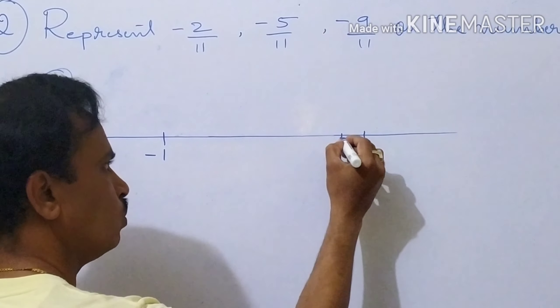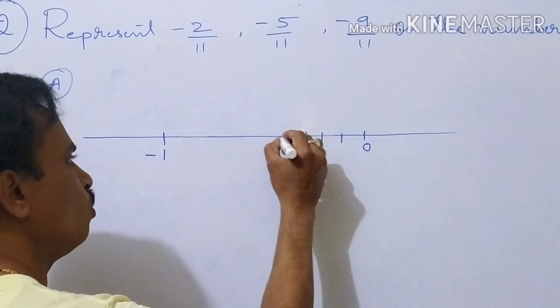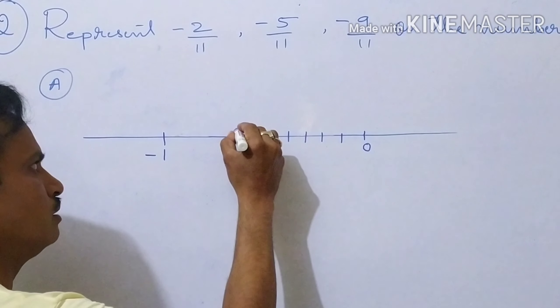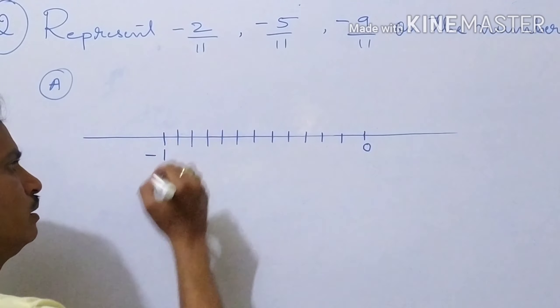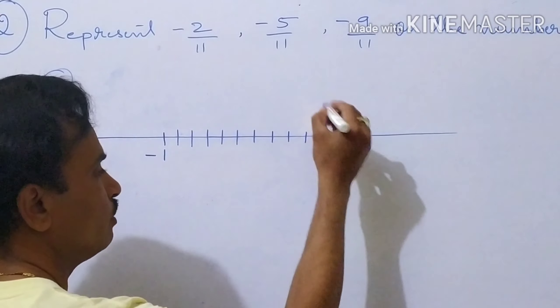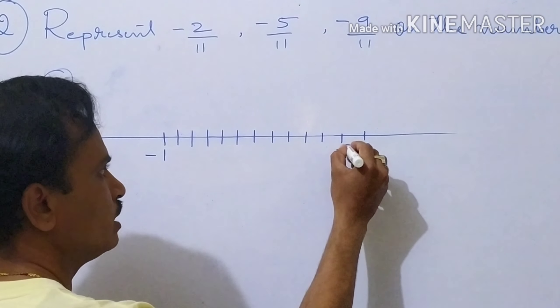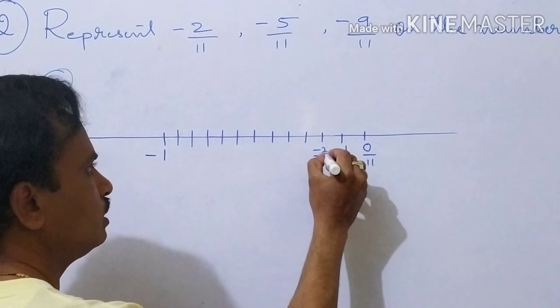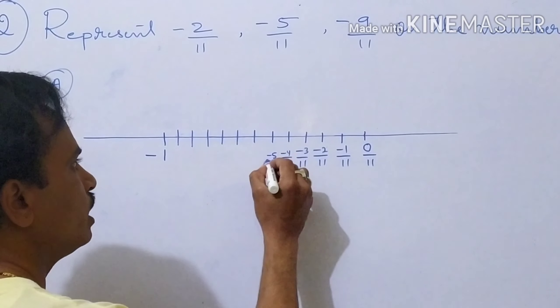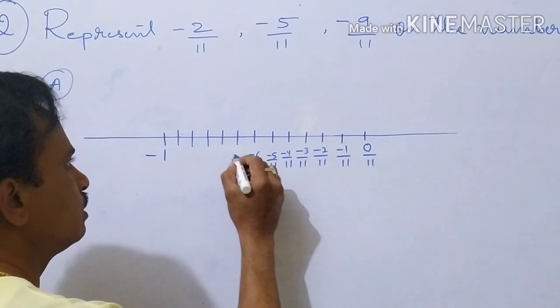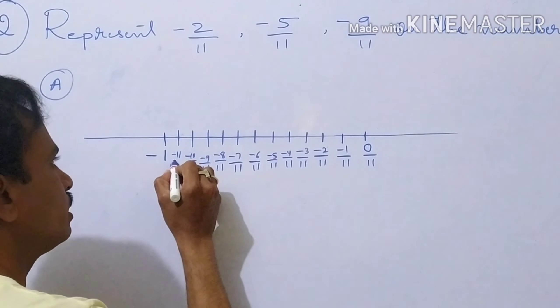So marking the first point: 1, 2, 3, 4, 5, 6, 7, 8, 9, 10, 11. Now 0 by 11 is there, then minus 1 by 11, minus 2 by 11, minus 3 by 11, minus 4 by 11, minus 5 by 11, minus 6 by 11, minus 7 by 11, minus 8 by 11, minus 9 by 11, minus 10 by 11, minus 11 by 11.